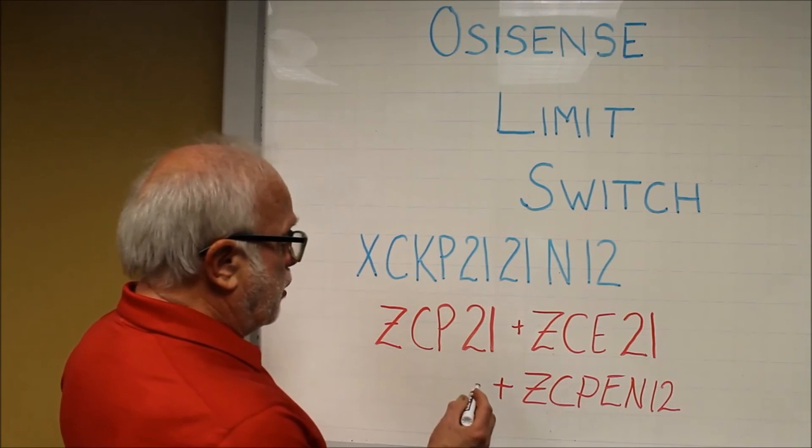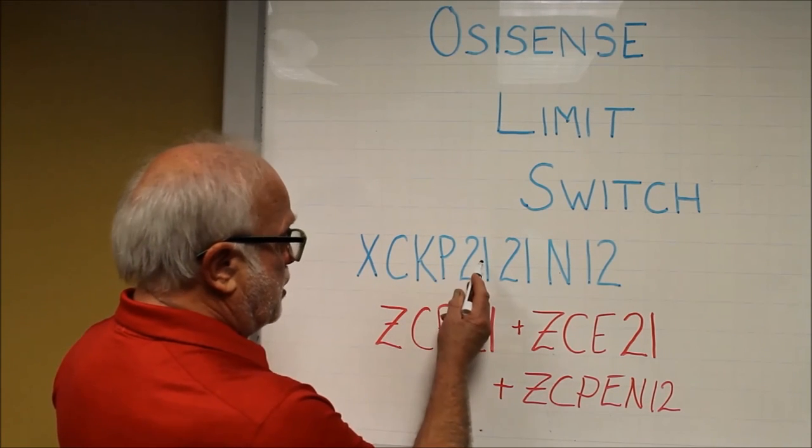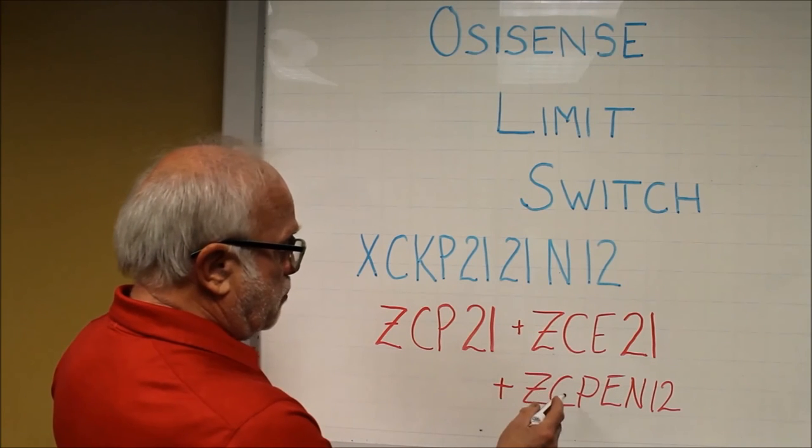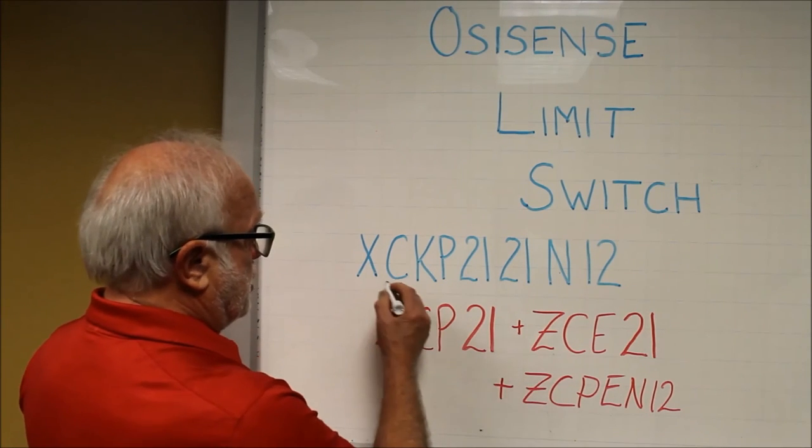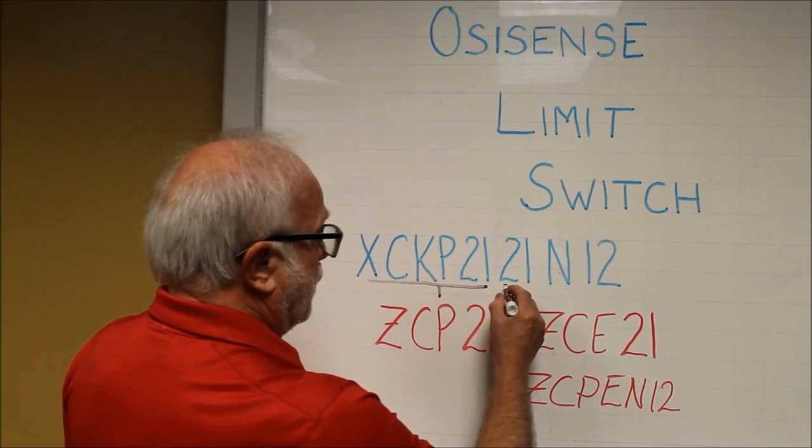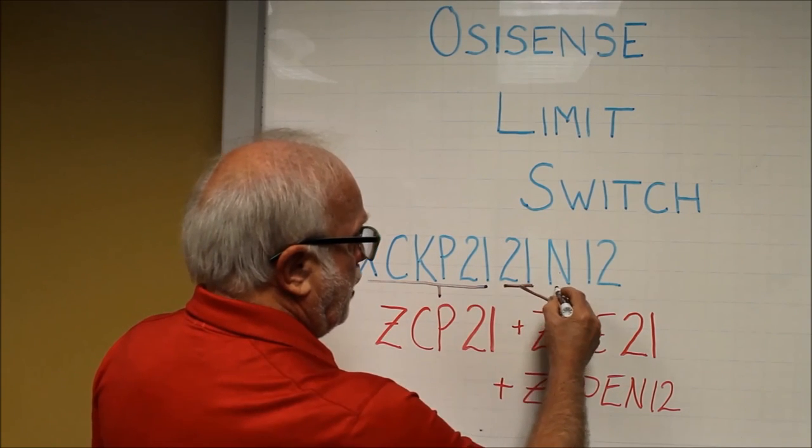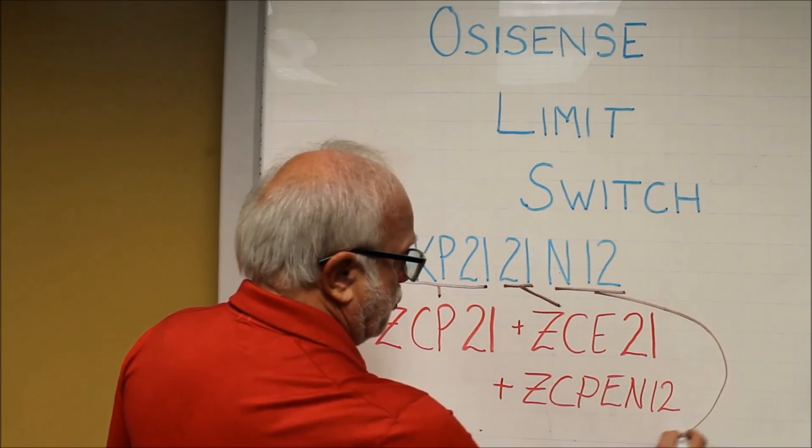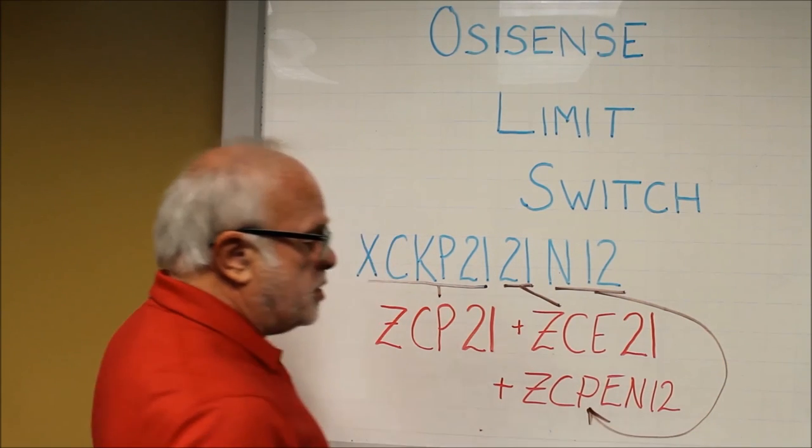So if we cannot get the switch as a complete assembly, we can specify components which may have a shorter lead time. We have the switch body, we have the switch head, and of course, we have the conduit entry. This completes the assembly.